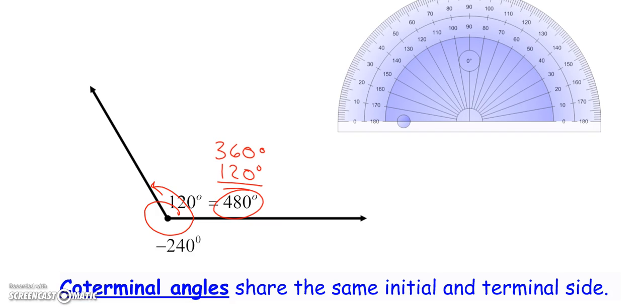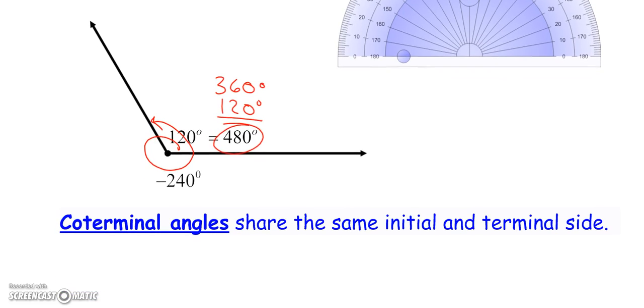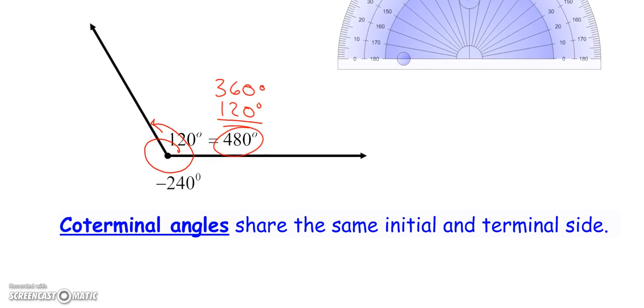You could call it 480 degrees, and it would look exactly the same. So these three angle measures, 120, 480, negative 240, are called coterminal angles. Because when you draw them, they share the same initial and terminal side. Meaning three ways to write it.